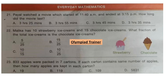Question 21. Payal watched a movie which started at 11:40 a.m. and ended at 3:15 p.m. How long did the movie last? The correct answer is option D: 3 hours 35 minutes.